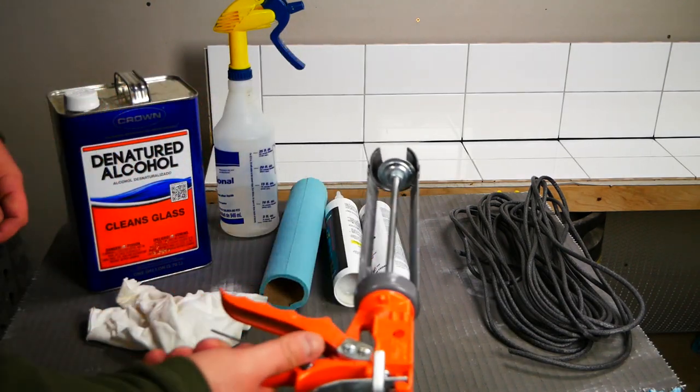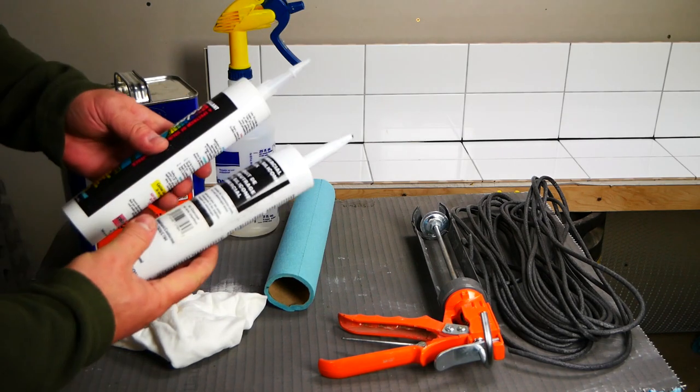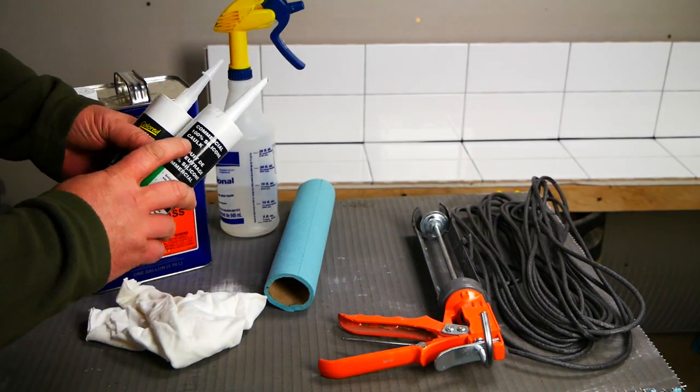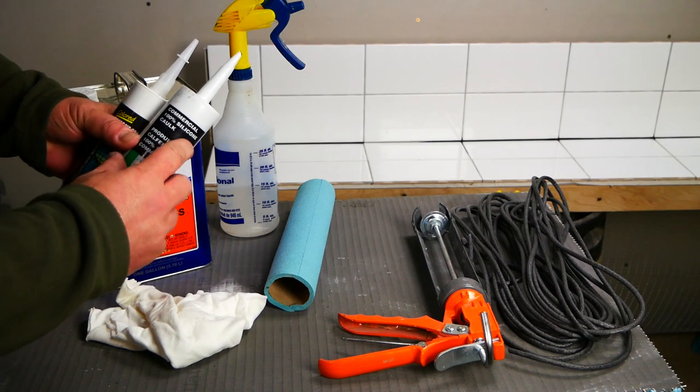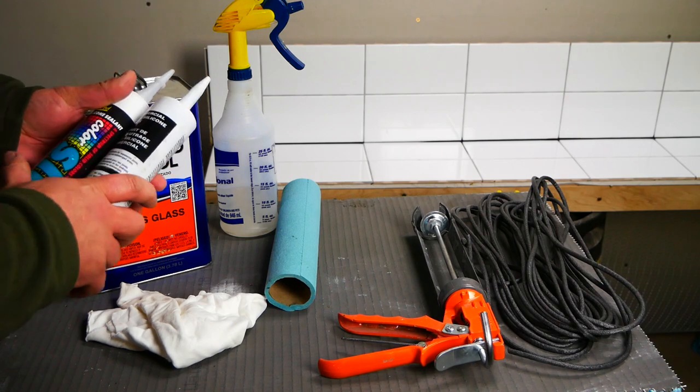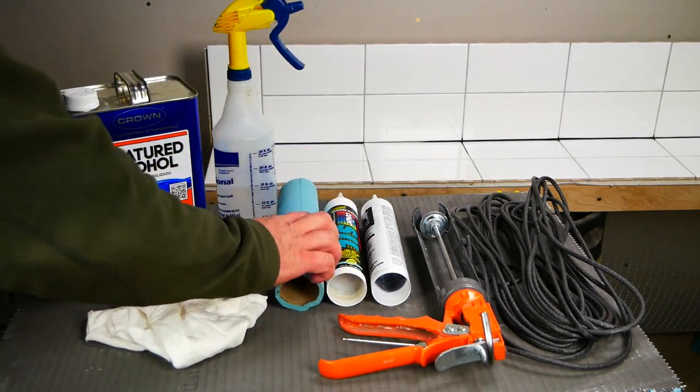You're going to need some silicone caulk. Somewhere on that tube, you want it to say 100% silicone caulk—not siliconized, not acrylic, not latex, but 100% silicone. I'm going to use black silicone on white tile for this demonstration.